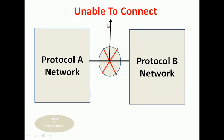We can observe here a protocol A network and a protocol B network. A system connected inside protocol A wants to send data to a system connected inside protocol B. So it is impossible to send the data directly, because they are implemented in two different protocols. Intercommunication between these two different protocols is not possible directly. To resolve this problem, gateways are introduced.